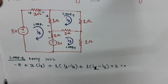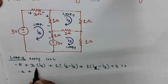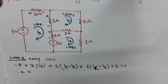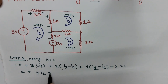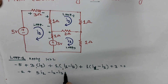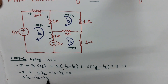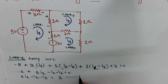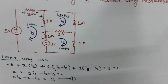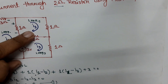Simplifying: minus 5 plus 3i1 plus i1 plus i1 gives 5i1, then minus i2, minus i3, equal to 0. After simplification, the first equation is: 5i1 minus i2 minus i3 equals 2.